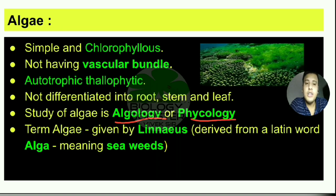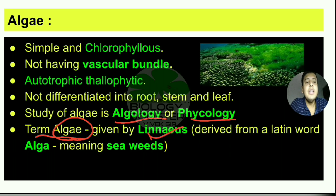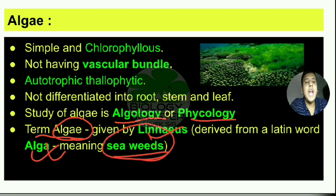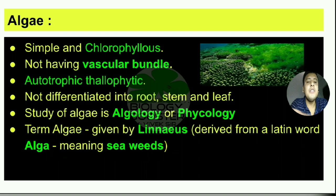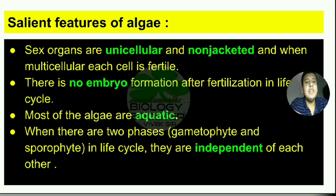The term 'algae' was given by the scientist Linnaeus. Linnaeus derived this term from the Latin word 'alga', which means seaweeds. Seaweeds refers to plants or parts of plants present in the sea. So Linnaeus derived the term 'alga' from the Latin word meaning seaweeds.